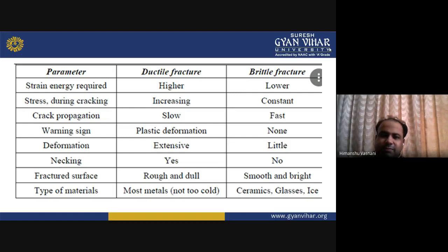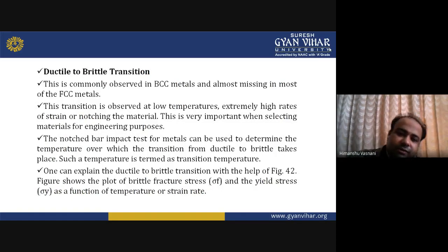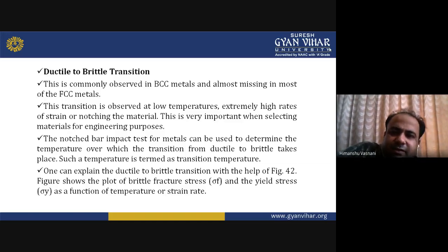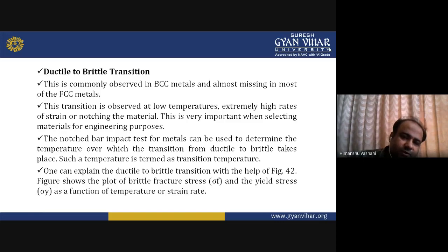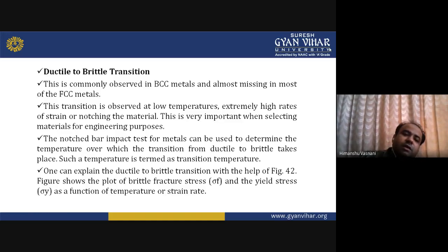Most metals have ductile fracture while ceramics, glass, and ice are examples of brittle fracture. The ductile to brittle transition is commonly observed in BCC (body-centered cubic) metals and is almost missing in most FCC (face-centered cubic) metals. This transition is observed at low temperatures, extremely high rates of strain, and on notching the material. This is very important when selecting materials for engineering applications.